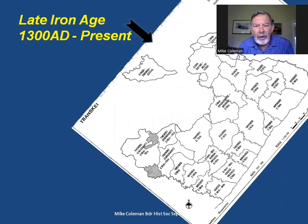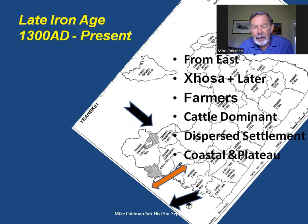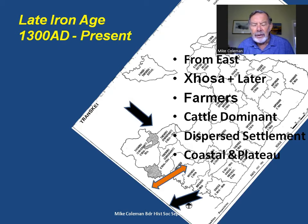As we get into the later Iron Age through to the present day, with the arrival of later Iron Age Bantu peoples from the east — generally called Xhosa people, but including a number of other groups, particularly from KwaZulu — they are farmers with livestock, with cattle being dominant. They preferred dispersed settlement, unlike the early Iron Age people who lived in nucleated villages. They first settled in the coastal areas, and only about 300 years ago moved up onto the plateau of what is now the Transkei.